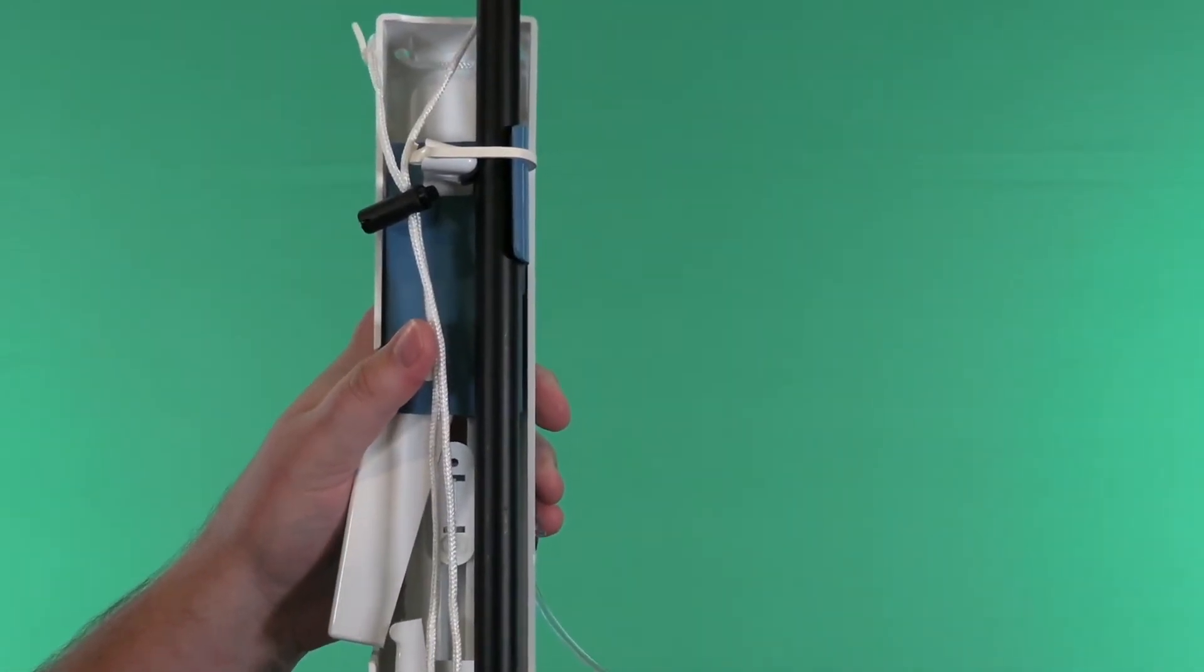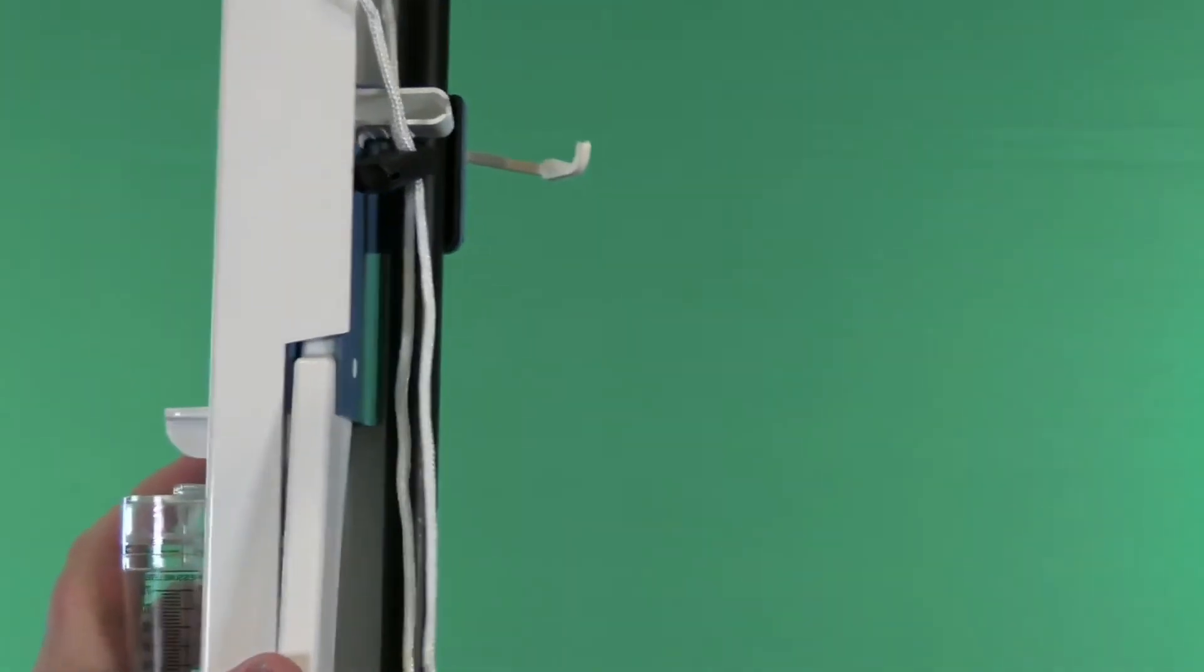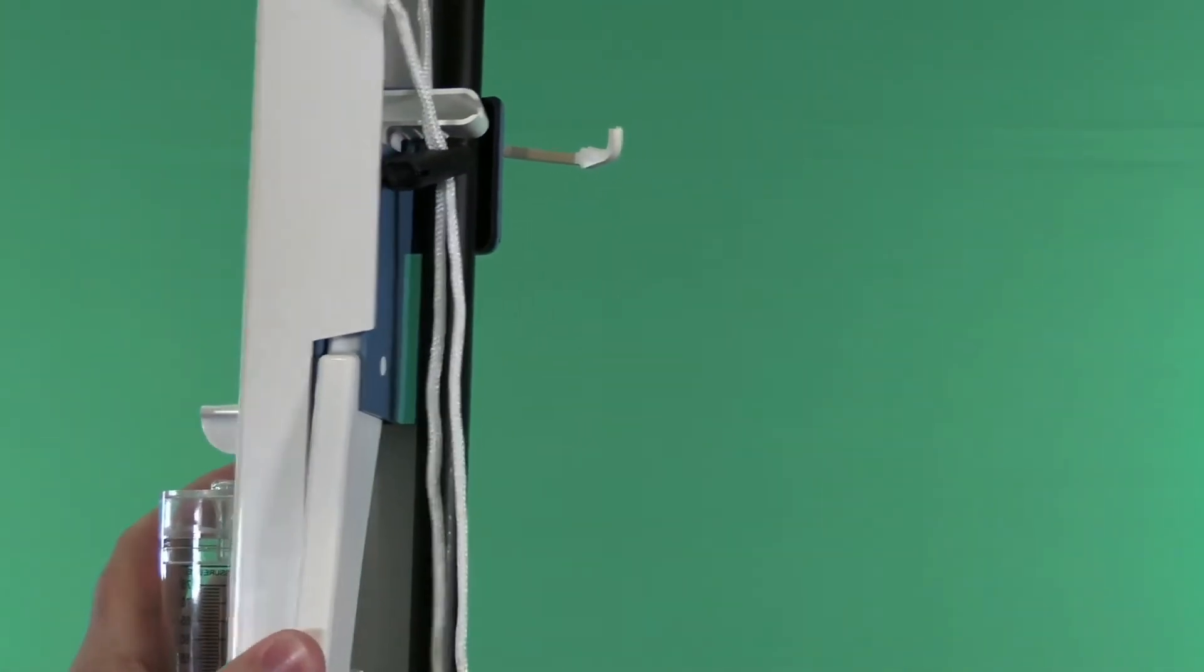They just pop off like this. And then there's this—see this little thing I can squeeze with my thumb here? This will loosen it so you can take it actually off the pole.